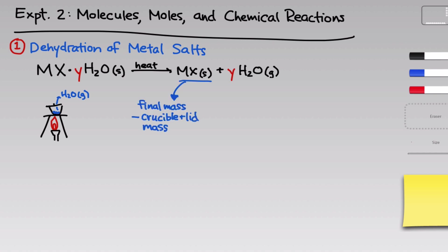If we take the final mass of the crucible lid and sample and subtract the initial crucible and lid mass that we measured before heating, we can arrive at a mass for the product solid MX.